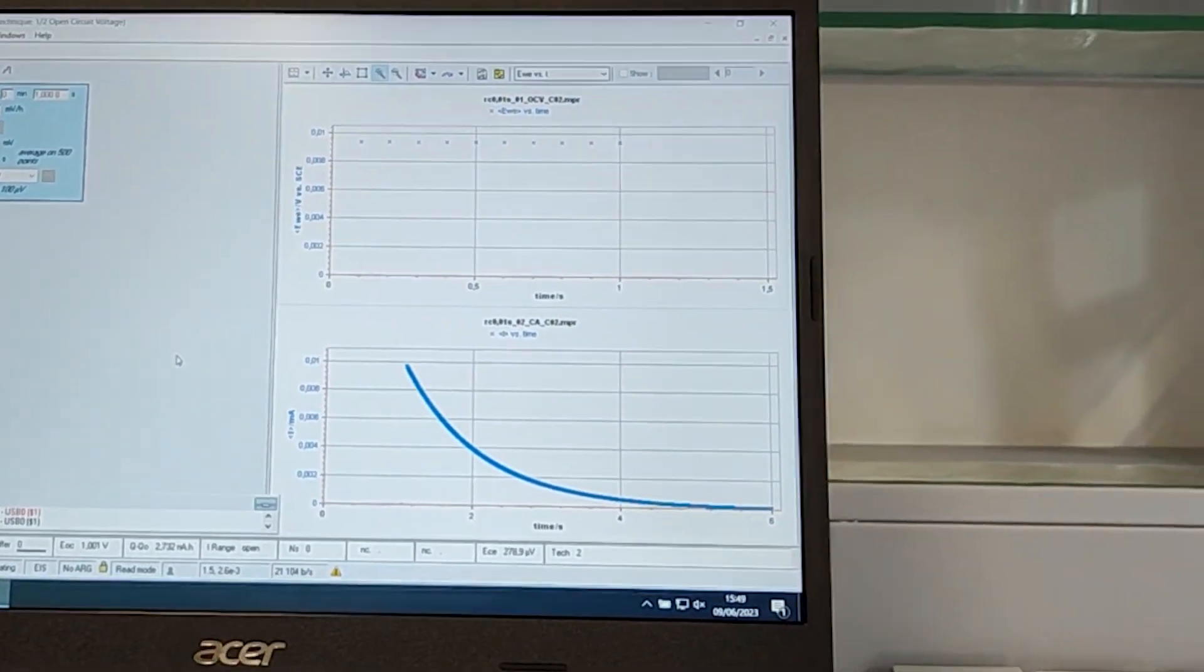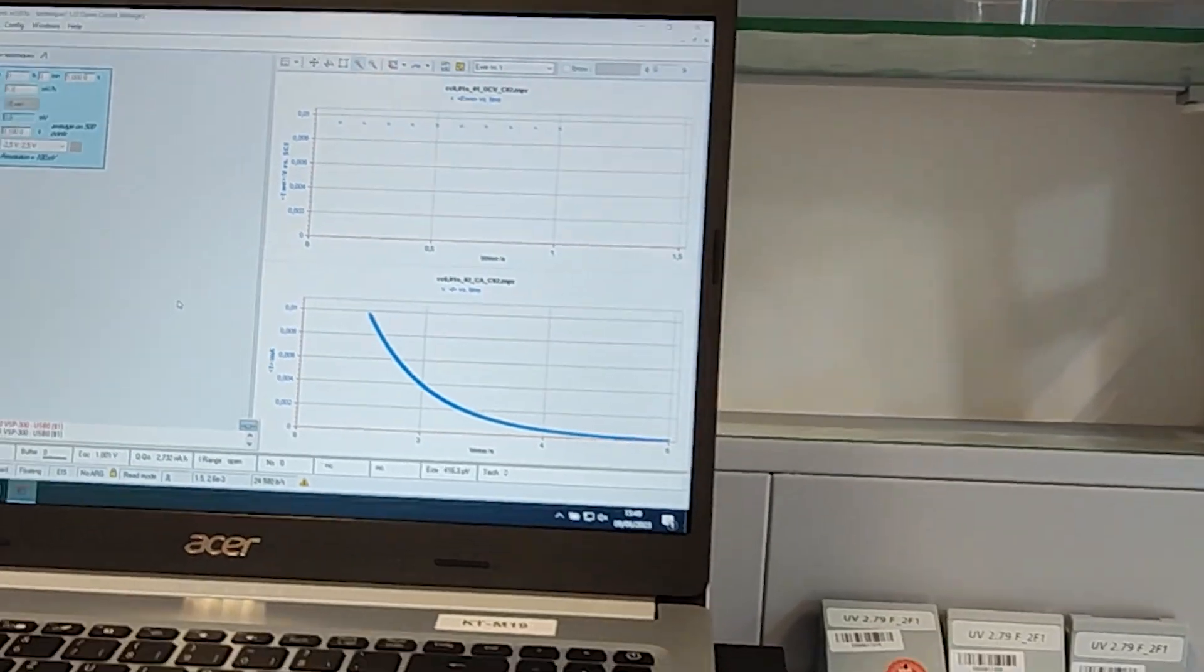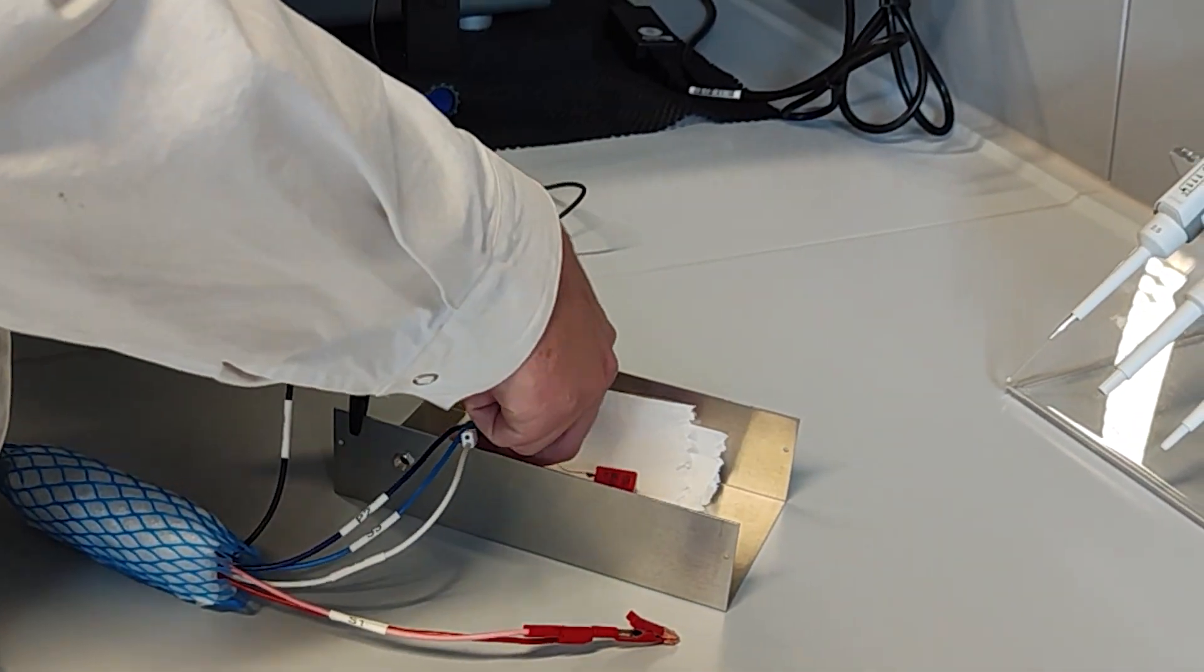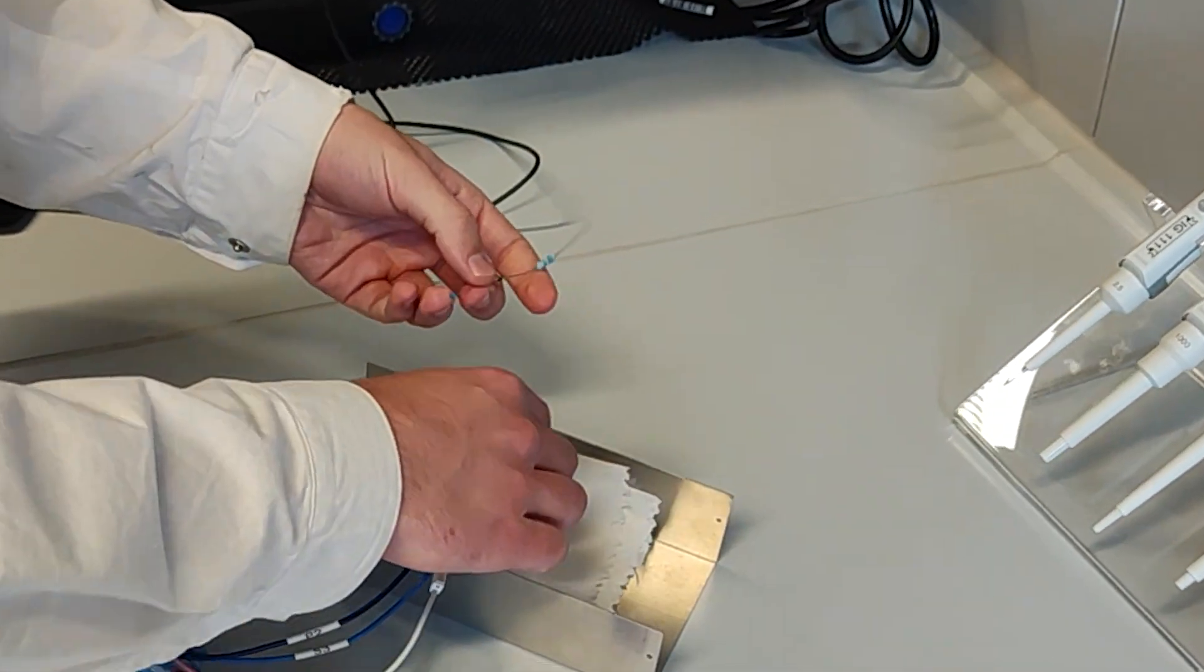Now let us look at how this behavior changes when we switch our circuit to an RC circuit with different values. So we disconnect the leads, reconnect them here